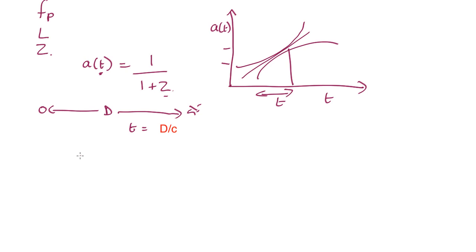But how do we work out the distance? Well, we can use the inverse square law. So we know that flux is equal to the luminosity divided by 4πD².